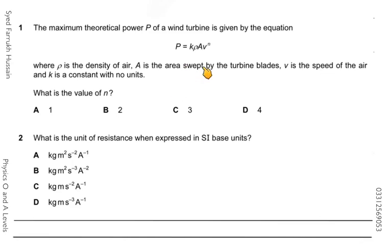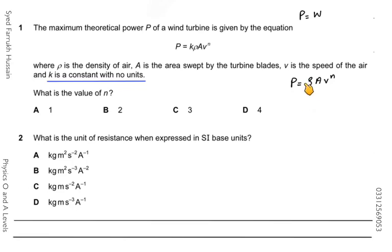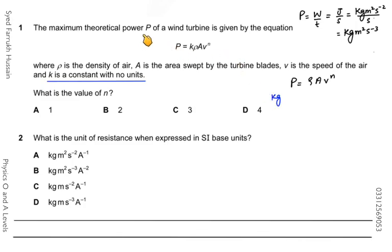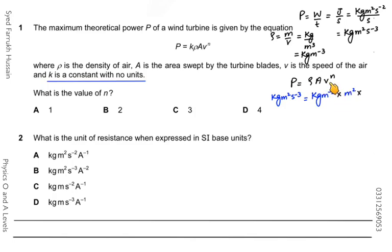In the next question, P = k·ρ·a·vⁿ is a homogeneous equation, meaning the units on the left-hand side equal the units on the right-hand side. Since k is a dimensionless constant, we exclude it. Power is work done per unit time: joule per second = kg·m²·s⁻³. Density is mass per unit volume = kg·m⁻³. Area is m², and speed is m·s⁻¹ to the power n.